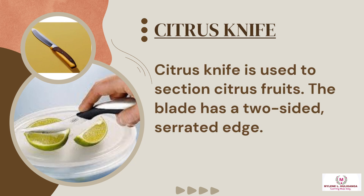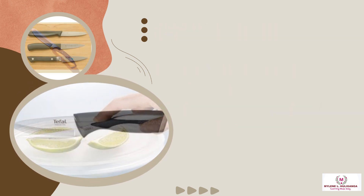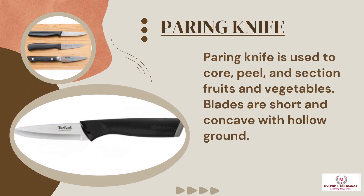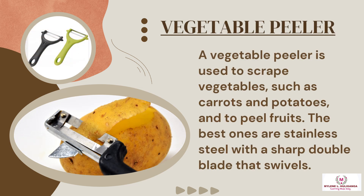The citrus knife is used to section citrus fruits; its blade has a two-sided serrated edge. The paring knife is used to core, peel, and section fruits and vegetables; its blades are short and concave with a hollow ground. A vegetable peeler is used to scrape vegetables such as carrots and potatoes and to peel fruits. The best ones are stainless steel with a sharp double blade that swivels.